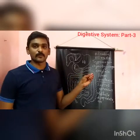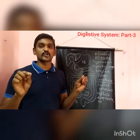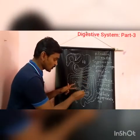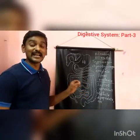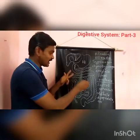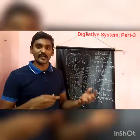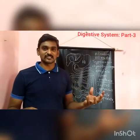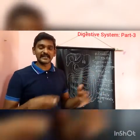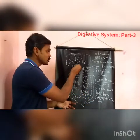The jejunum is the long coiled portion of the small intestine. Following the jejunum, the last part is called the ileum. The ileum is a highly coiled portion. It is in the small intestine where complete digestion takes place.